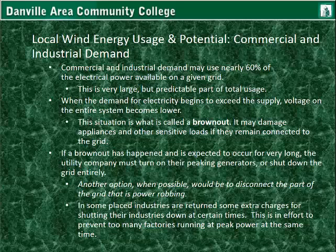Commercial and industrial demand may use nearly 60% of the electrical power available. It's a very large number, but it's predictable. Factories usually run drawing about the same amount from the grid, and it can be planned ahead. When the demand for electricity begins to exceed the supply, voltage on the entire system becomes lower. This situation is called a brownout.